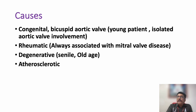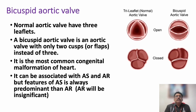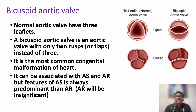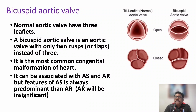So the common causes are: bicuspid aortic valve in younger individuals, especially in isolated AS; rheumatic heart disease when other valves are also involved; and atherosclerotic or degenerative disease in elderly individuals. In bicuspid aortic valve, other valves are not typically involved, whereas in rheumatic heart disease the mitral valve is usually also affected.